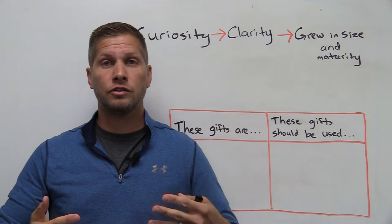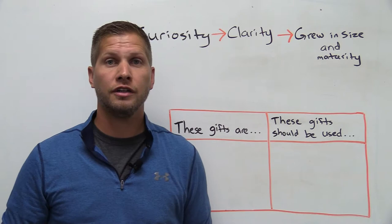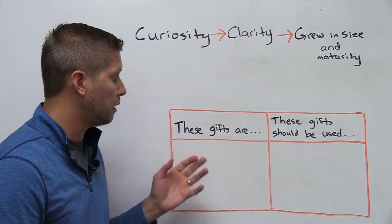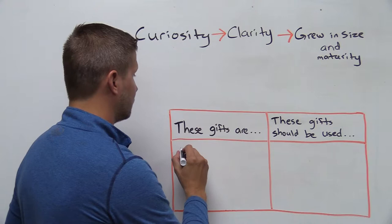What does Paul say to them that leads to clarity so that the church can grow in size and maturity? He teaches them two things about the spiritual gifts and two ways to use the spiritual gifts. The first thing that Paul teaches them about the spiritual gifts is that these spiritual gifts of speaking and interpreting tongues are given to some.